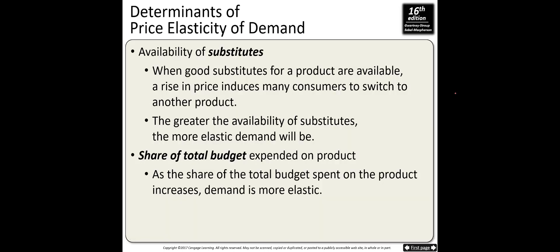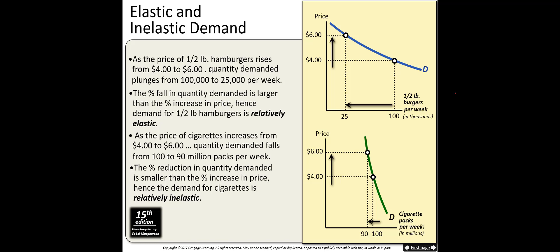Here is a visual example. As the price of half-pound hamburgers rises from $4 to $6, quantity demanded drops from 100,000 to 25,000 per week. The percentage fall in quantity demanded is larger than the percentage increase in price, so demand for half-pound hamburgers is relatively elastic. In the inelastic case, the price increases a lot but the quantity changes very little — the percentage change in quantity is much less than the percentage change in price.